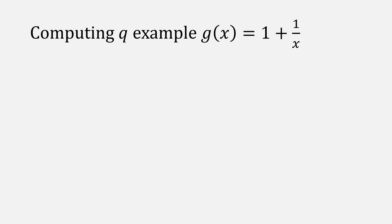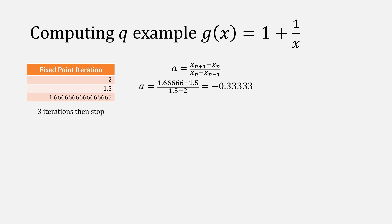Let's look at an example of computing q and note that this will work regardless of the case. We'll do three iterations of fixed point iteration and then stop. Then we'll plug those values into our equation for a, giving us the value of negative 0.3 repeating.